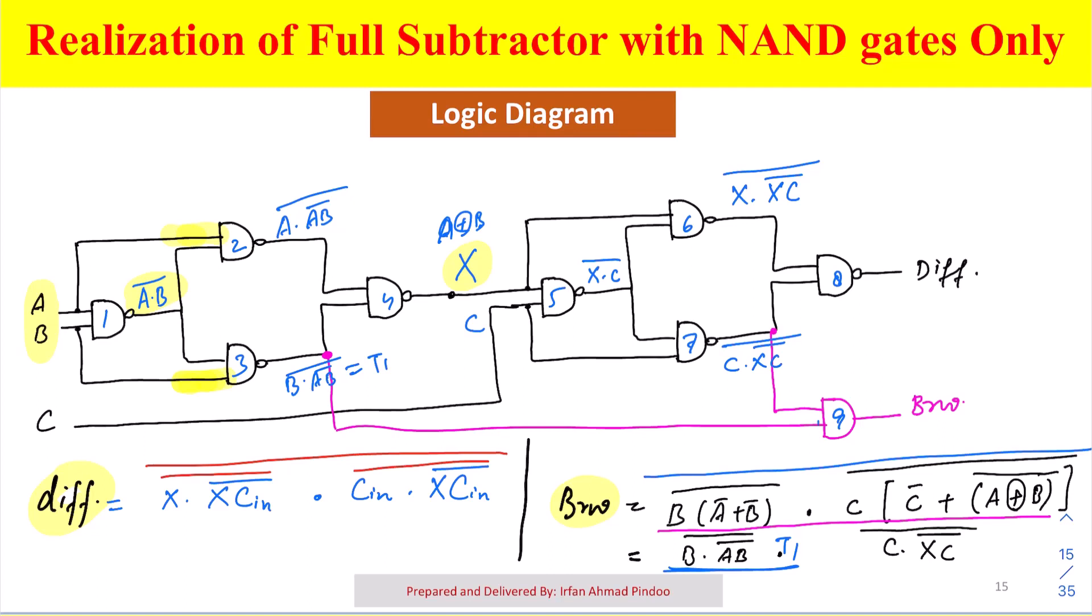We have given this as one of the inputs over here, you can see. Similarly, the next input is C dot XC whole bar, which is also available here. Let this be our T2. So what are we implementing in the borrow is actually T1 dot T2 with whole bar.